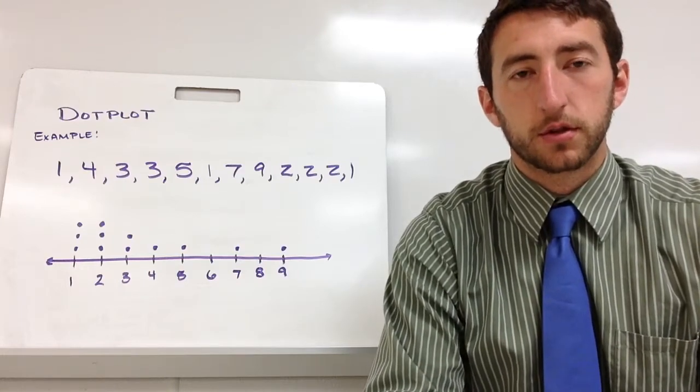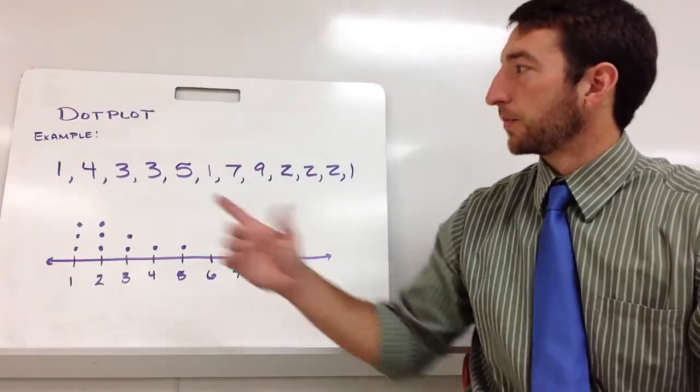So the first one is the dot plot. Let's just look at this example. We have this set of data.